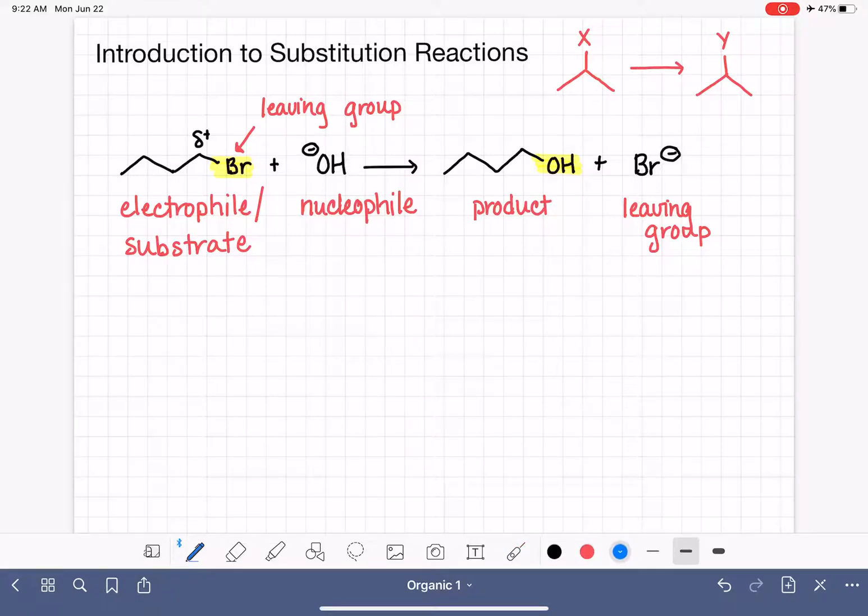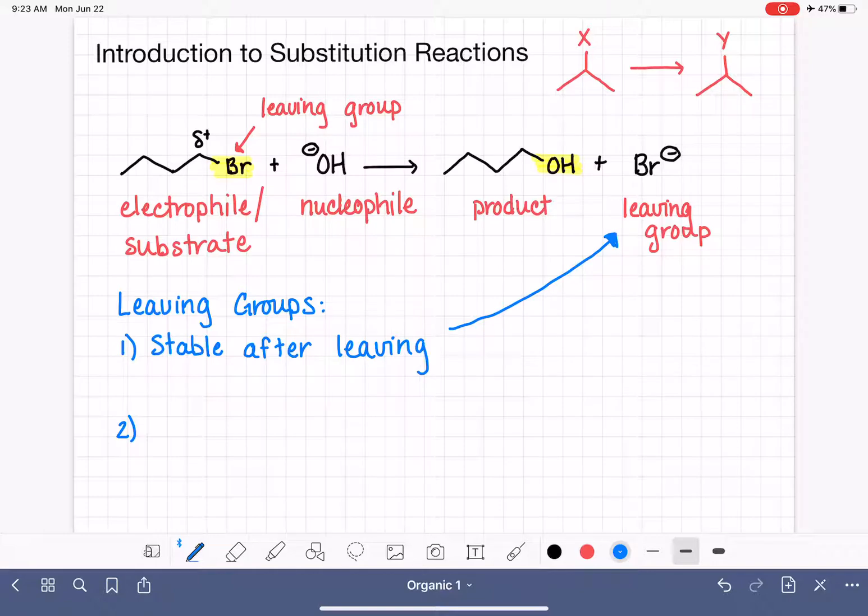Leaving groups cannot be just any random thing. We are not able to make anything leave easily off of an organic molecule. In order for a functional group or a single atom, in this case, to qualify as a leaving group or be able to serve as a leaving group, they have to meet two very specific criteria. The first one is that they have to be stable after they leave the molecule. So we're talking about over here as a product.